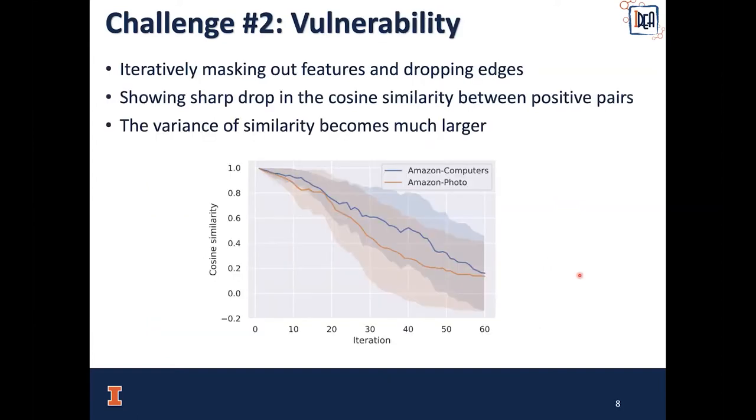The second challenge is vulnerability. In our experiment, we iteratively mask out some features and drop edges, and we observe a sharp drop in cosine similarity between positive pairs. For example, at the 30th iteration with 50% features and edges dropped and masked, we can observe that the cosine similarity is already under 0.5. This is usually not the case on the visual domain. We can also observe that the variance of the similarity becomes much larger as we add iterations.